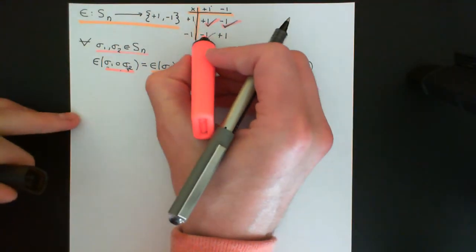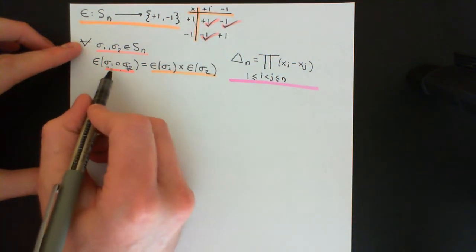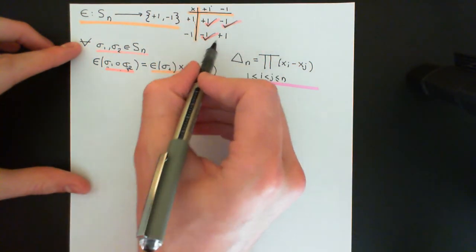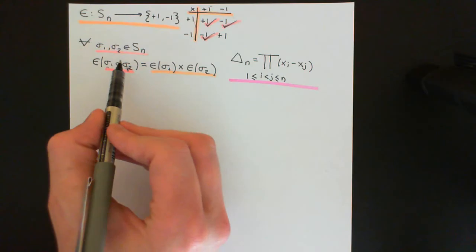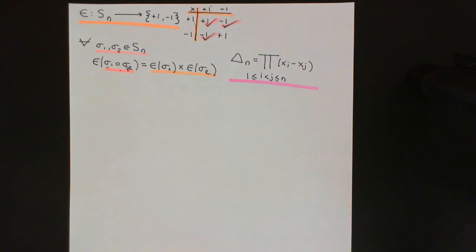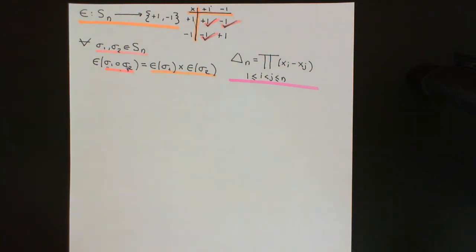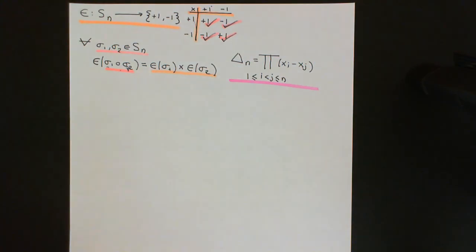Case 4: both sigma 1 and sigma 2 are odd. Their signs are both negative 1, and negative 1 times negative 1 equals plus 1, so we need their composition to be an even permutation. Sigma 2 flips an odd number of terms, then sigma 1 flips another odd number. Adding two odd numbers gives an even number. Any cancellations subtract 2 from the total, which maintains the even parity. So the composition is even. All four cases are verified and the sign function is a group homomorphism.